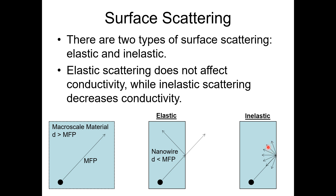Inelastic scattering, on the other hand, decreases conductivity. So when finding the electrical properties of a nanomaterial, we must consider whether scattering will be elastic or inelastic. If we have a nanomaterial whose diameter is smaller than the mean free path, as in a nanowire, elastic scattering occurs and conductivity is not affected. But if we have inelastic scattering, the conductivity decreases.